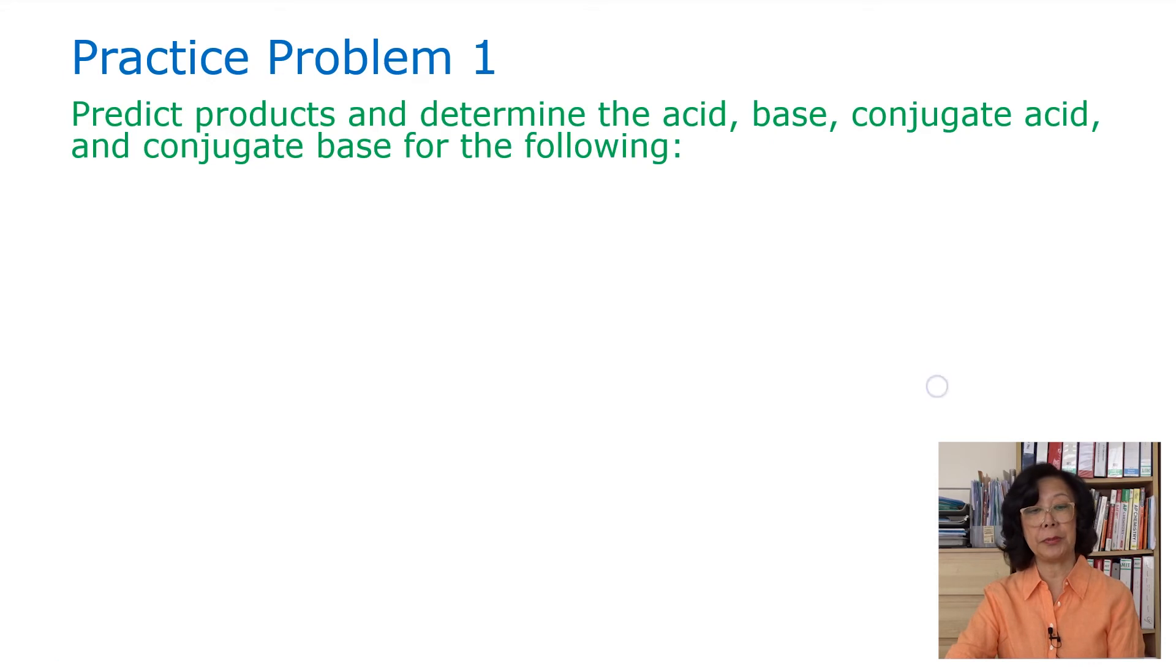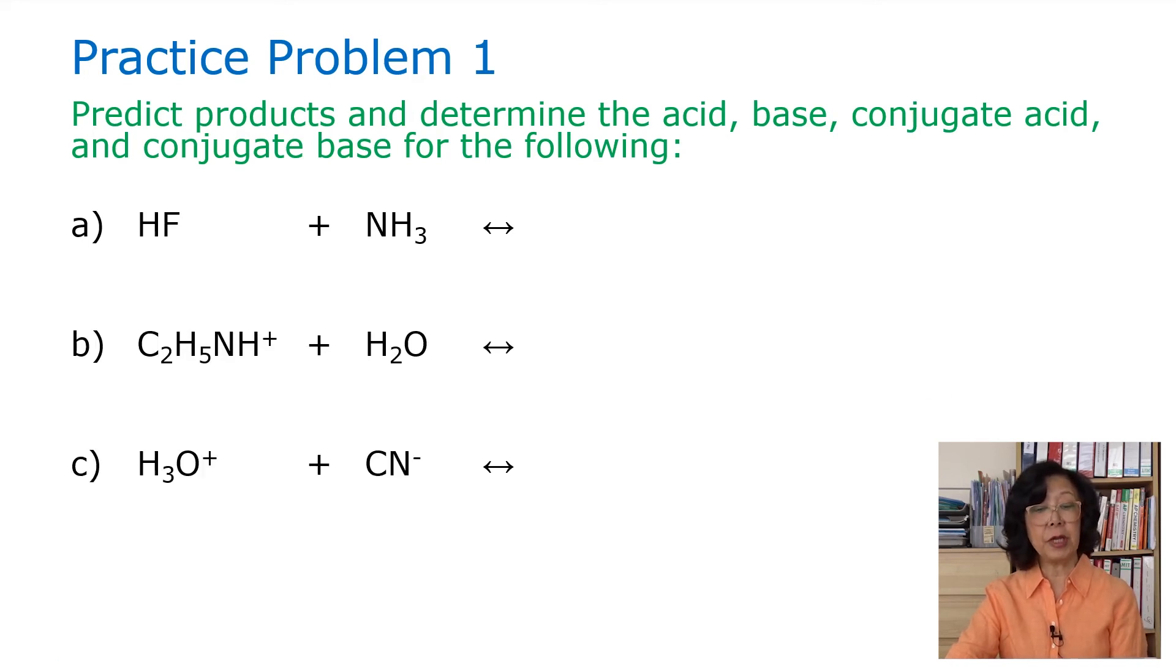Try practice problem number 1. Predict products and determine the acid, base, conjugate acid, and conjugate base for the following. Here is HF and ammonia, and C2H5OH and H+, and water, hydronium ion and cyanide ion, and sulfurous acid and hydroxide ion. You may want to pause the video and see if you can arrange for the transfer of the proton and identify the conjugate acid-base pair.